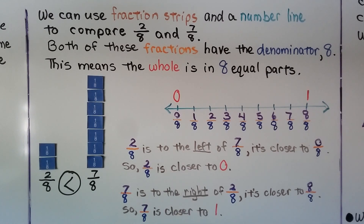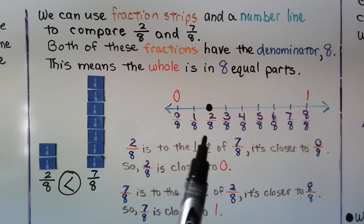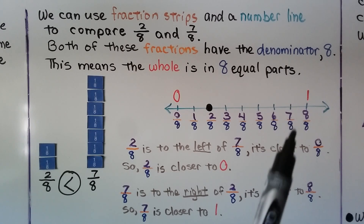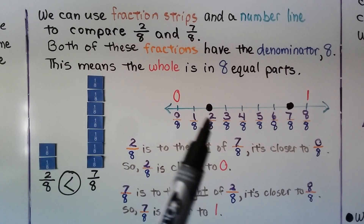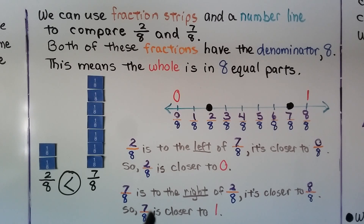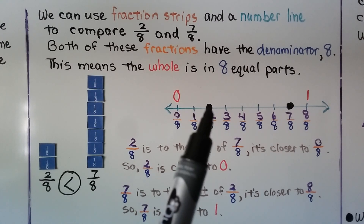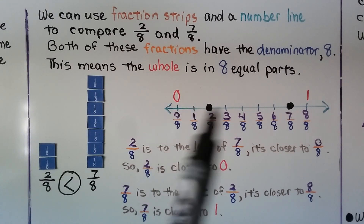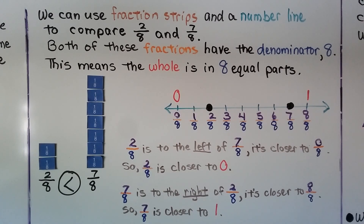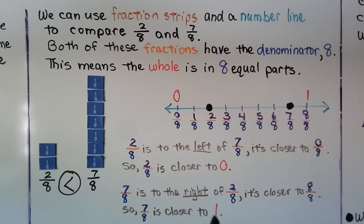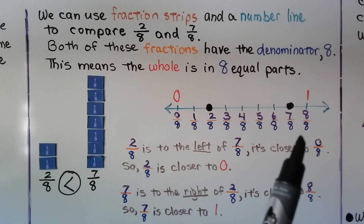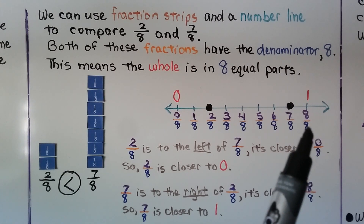We can see that 2 eighths is right here on the number line, and it's to the left of 7 eighths. Here's 7 eighths. This 2 eighths is closer to 0, so 2 eighths is smaller than 7 eighths. This 7 eighths is to the right of 2 eighths, closer to 8 eighths — it's closer to 1 whole.